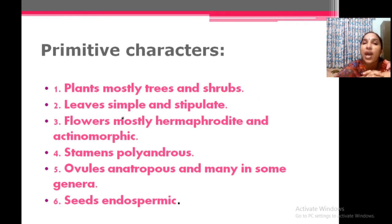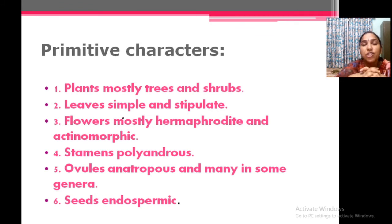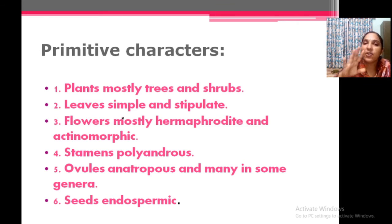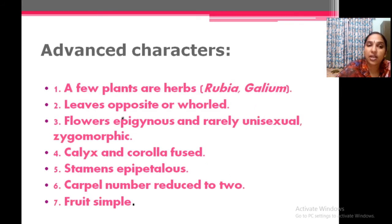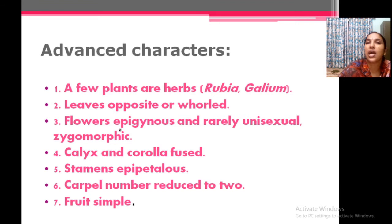What are the primitive characters of Rubiaceae? They are mostly trees and shrubs — because herbs are the advanced feature, here they are shrubs. Leaves are simple and stipulated. Flowers are bisexual — zygomorphic is the advanced condition; here flowers are actinomorphic. Unisexual is the advanced condition; here flowers are bisexual. Then polyandrous stamens. Ovules anatropous, endospermic seeds. The advanced characters: some plants are herbs, and epigynous condition is an advanced feature. Epigynous is advanced; hypogynous is primitive.